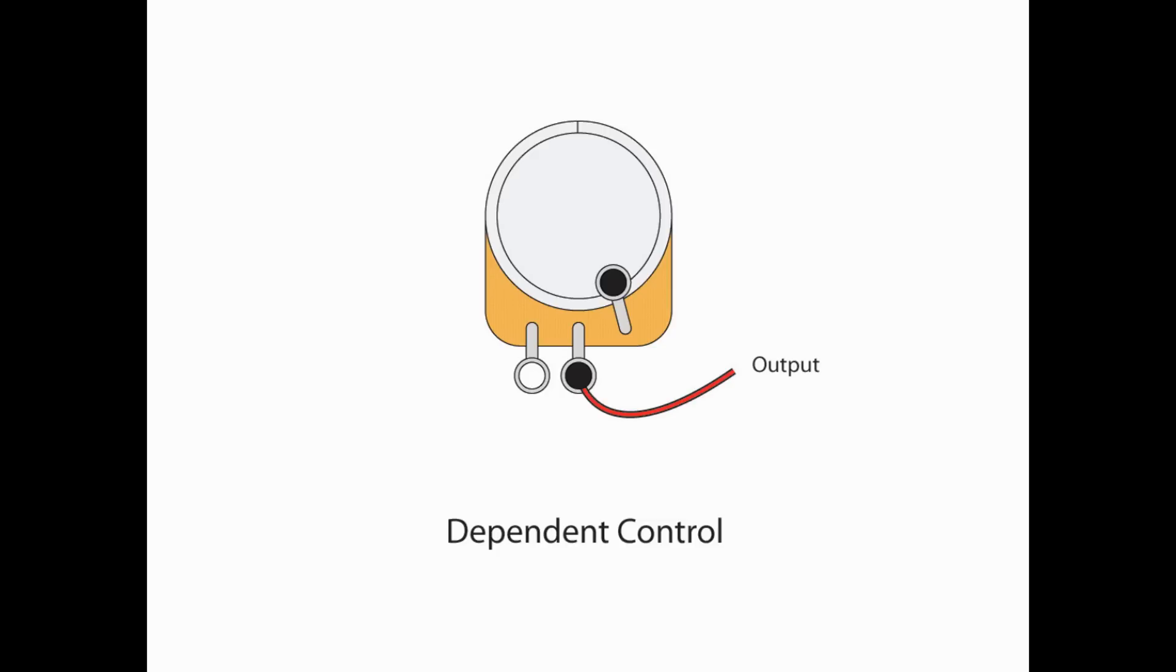To make this very simple, it goes like this. If your output is coming off of lug L2, or the center lug, you have a dependent volume mod. If it's coming off of L1, you have an independent volume mod.